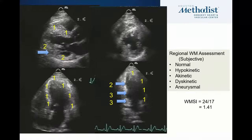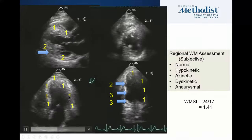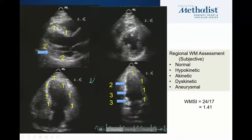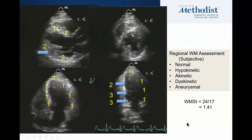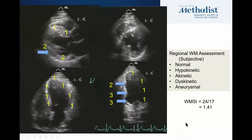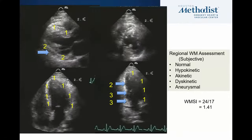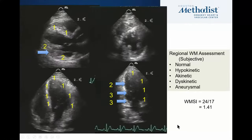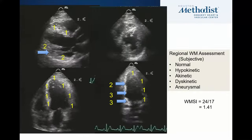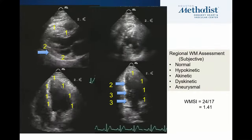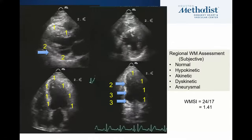Going back to our example: there is some movement here so this is hypokinetic; the septum and lateral wall are normal; anterior wall is normal; and here we have some akinesis — score three — and maybe some hypokinesis — score two. We add all that together: 24 divided by 17, giving a wall motion score index of 1.4. In the early days of echocardiography, this index was shown to be a very good predictor of outcomes, neck and neck with EF. Score indices of two or greater were predictive of poor prognosis, equivalent to an EF less than 30 percent.